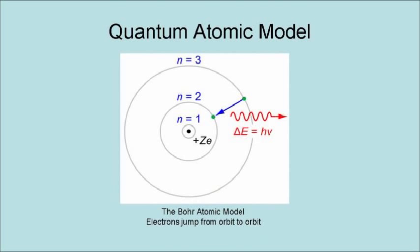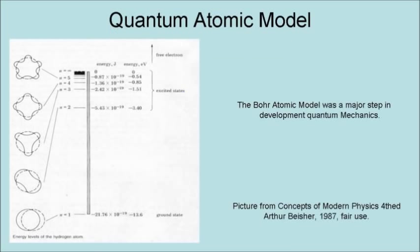The result is that electrons jump from orbit to orbit, with photons emitted when going to a lower orbit and photons being absorbed when going to a higher orbit. It turns out that the transitions between the possible electron orbits matched the spectral lines actually observed in hydrogen. This was a major step in the development of quantum mechanics.